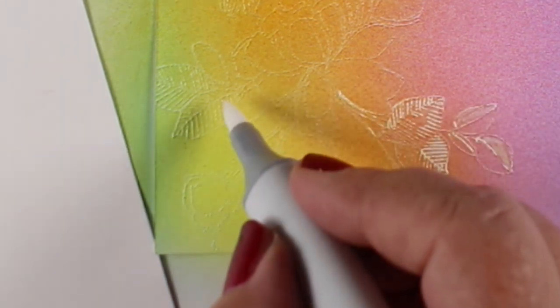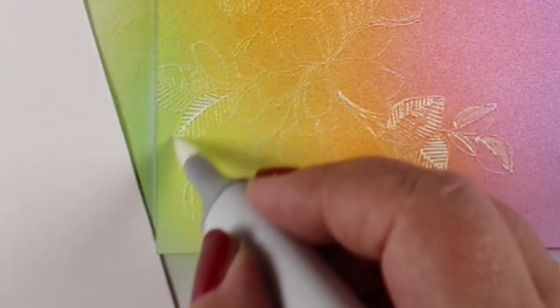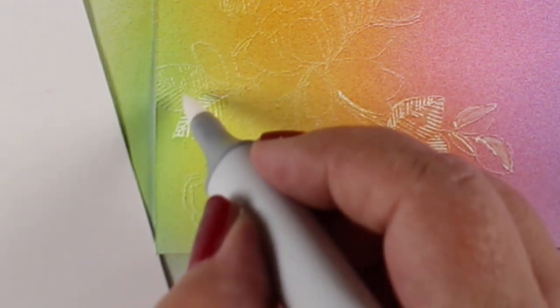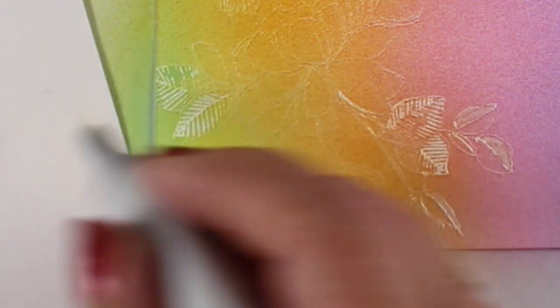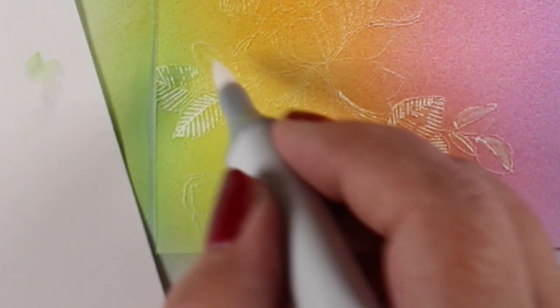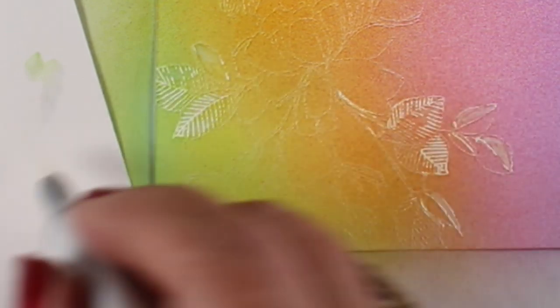I'm trying to basically lift up some of the white lines. And what this colorless blender does is just take the color off of the surface of the embossing powder.